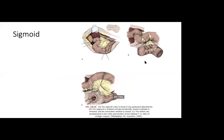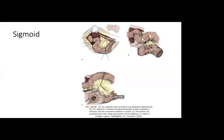For the sigmoid colon conduit, it's almost the same — 15 cm in length. It is also mobilized, although it is more mobile and closer to your conduit. The attachment along the line of Toldt along the descending colon — the segment is isolated on the sigmoid vessels and it is placed lateral on the sigmoid colon. A stoma has been made as illustrated.